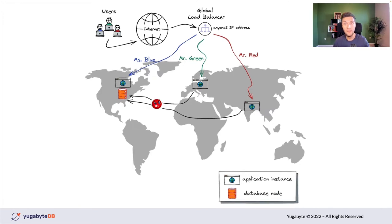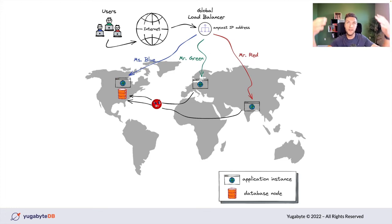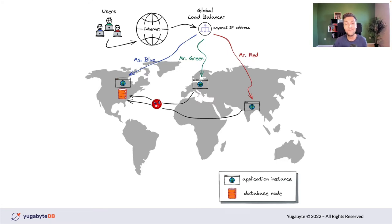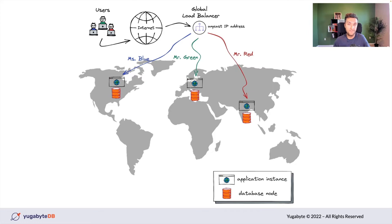However, the database is still running only in the United States. This is bad from both performance and data regulatory standpoints. Even though the European application instance processes Mr. Green's requests, it still goes to the United States to get or send data — so reading conversation history or sending a message still incurs high latency. We need the database architecture designed so that the European application instance can read and write data much faster by working with a database instance located in Europe.